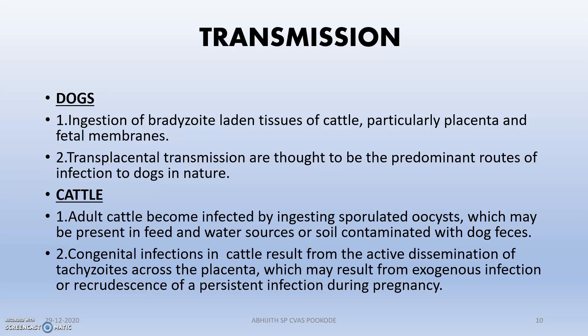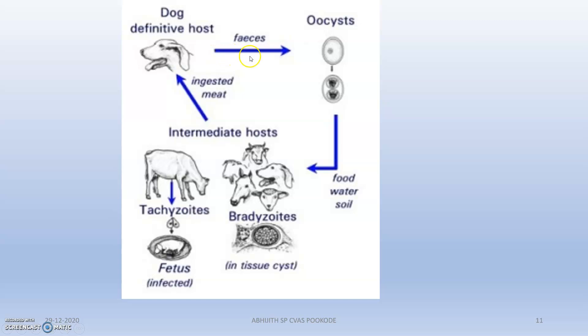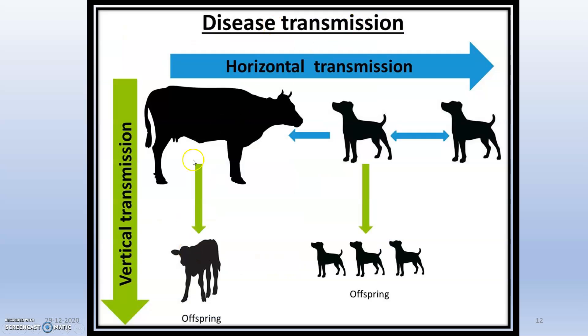In cattle, adults mainly become infected by ingesting sporulated oocysts present in soil contaminated by dog feces. Congenital infection in cattle occurs due to active dissemination of tachyzoites across the placenta during pregnancy. Oocysts from dog feces enter intermediate hosts via food, water, and soil, and tachyzoites move to the fetus through the placenta, with vertical transmission from mother cow to offspring.